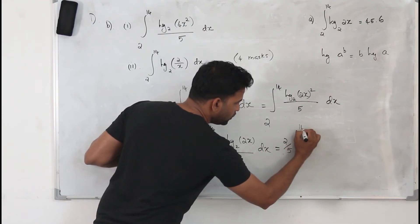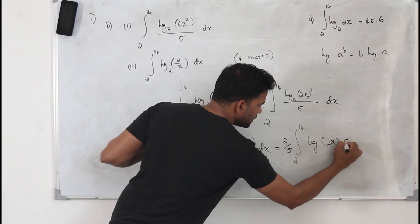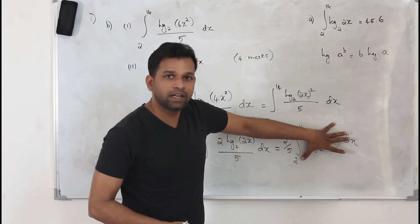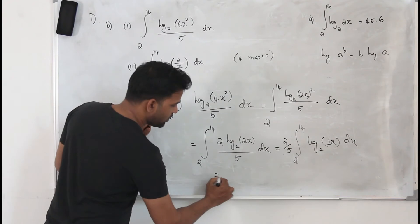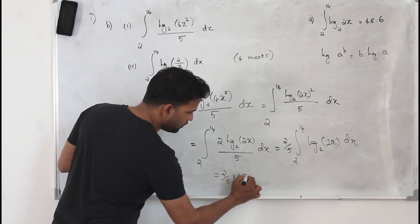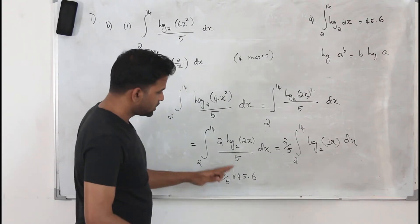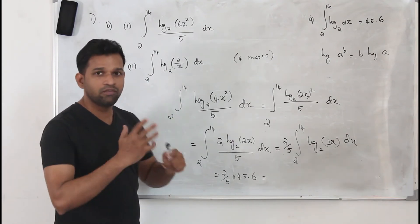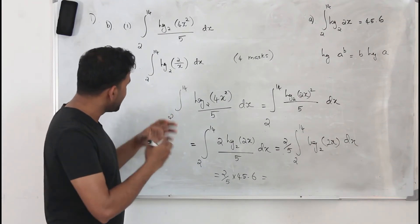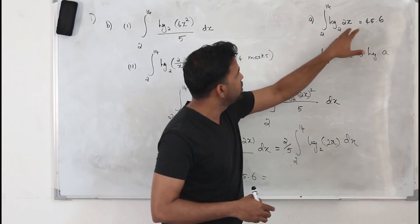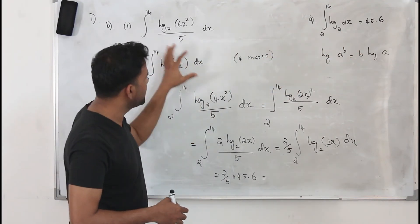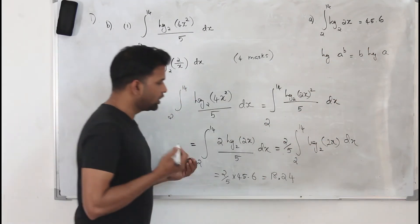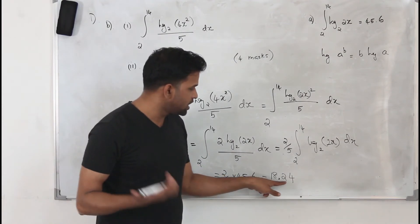We write it as (2/5) × ∫₂¹⁴ log₂(2x) dx. Now substitute the value from part a — replace this whole integral with 45.6. So the answer is (2/5) × 45.6. Find this using a calculator. Always try to rearrange any weird-looking function so you can substitute the known integral value of 45.6. If the question asks for one decimal place, write it as 18.2.